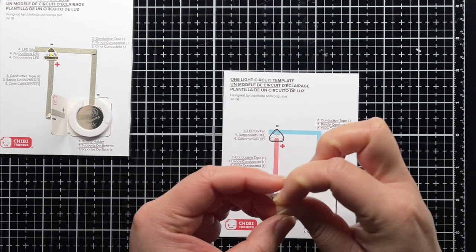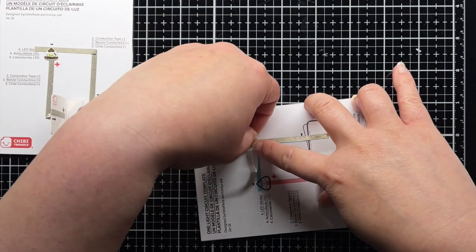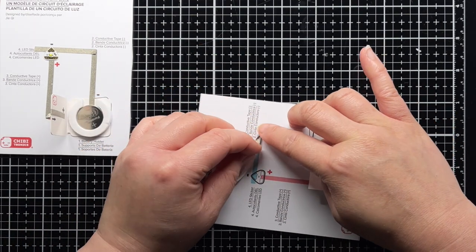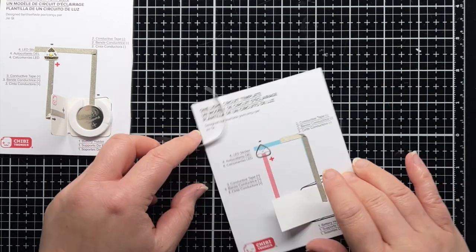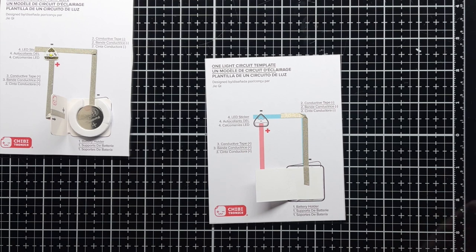Next you'll apply your conductive fabric tape as we did in the first example. I wanted to show you what you can do if you happen to cut your tape too short. With our conductive fabric tape, you can simply cut another piece of tape and overlap the two to continue your circuit.